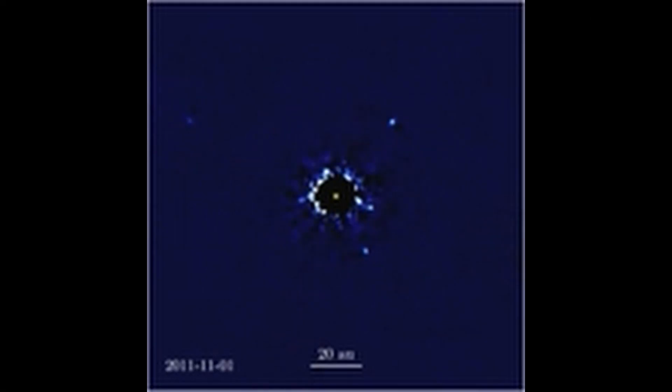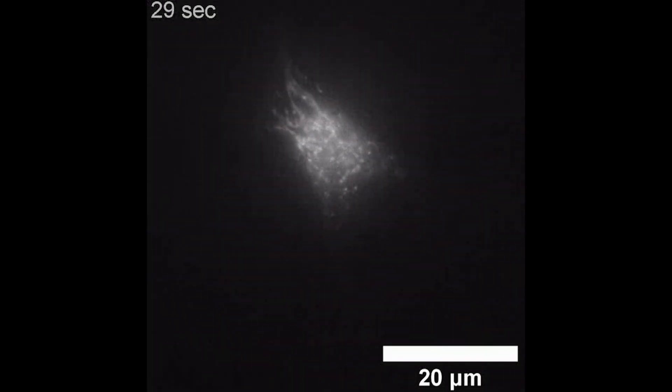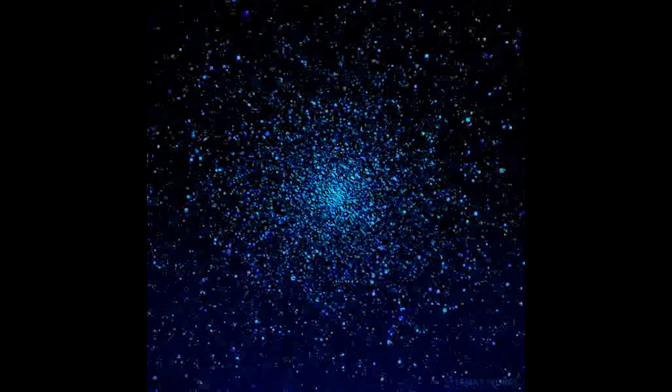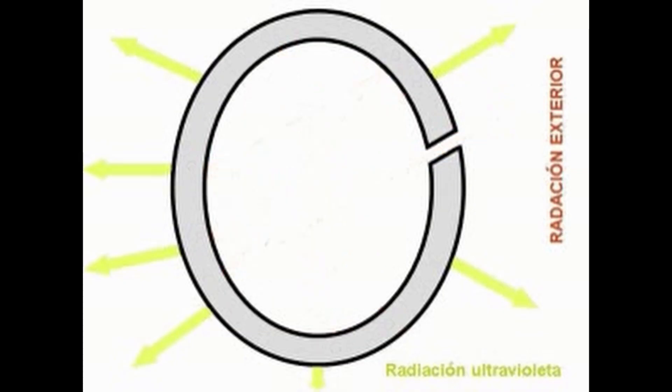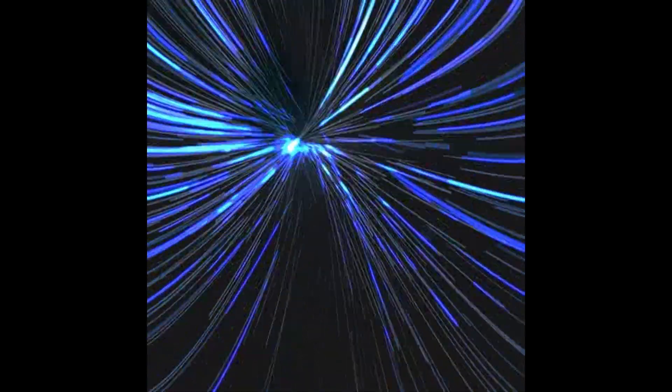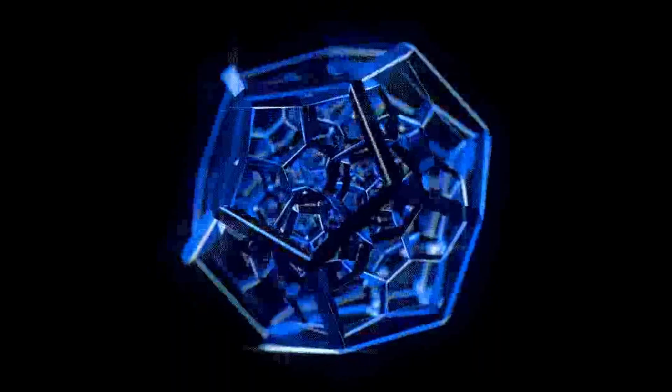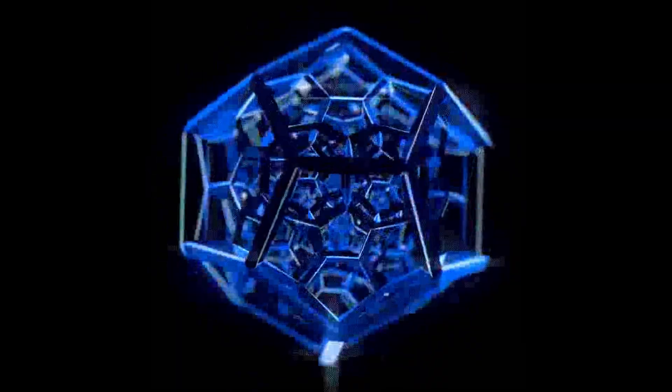Instead of just counting points, intersection theory assigns an intersection multiplicity to each intersection point, capturing how the subvarieties intersect at a given point. Bezout's theorem is a special case of intersection theory for plane curves. Intersection theory extends beyond curves to higher-dimensional varieties, playing a crucial role in enumerative geometry, topological invariance, and algebraic cycles.